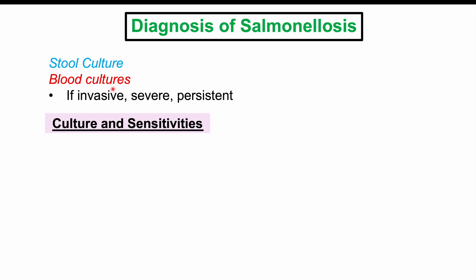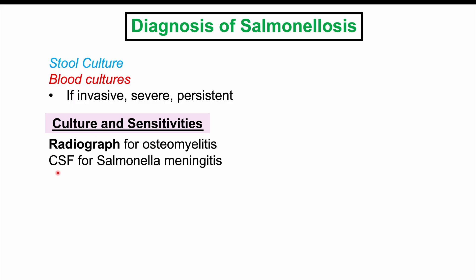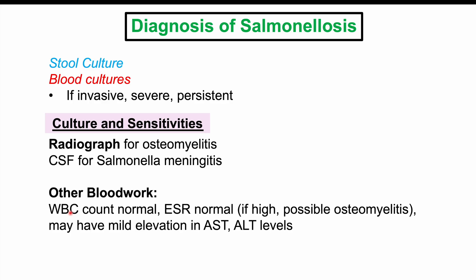Culture and sensitivity testing is important to determine antibiotic sensitivity. A radiograph of the bone in question can help check for osteomyelitis in suspected sickle cell patients, though acute osteomyelitis may not show on X-ray — radiographic findings are more common in chronic cases. CSF analysis is important in suspected Salmonella meningitis, showing high opening pressure, high protein, and low glucose. White blood cell count and ESR are often normal in non-typhoidal Salmonella infections, though an elevated ESR may suggest osteomyelitis. Some patients may have a mild elevation in AST and ALT, indicating mild liver inflammation.